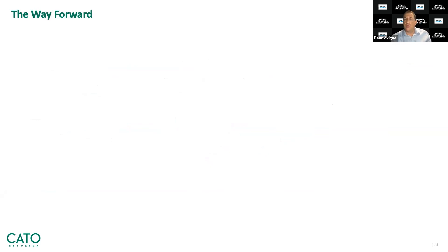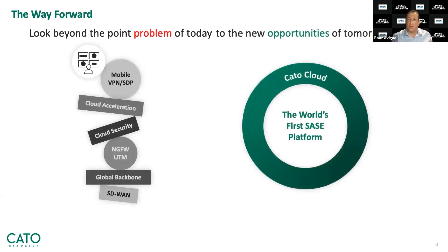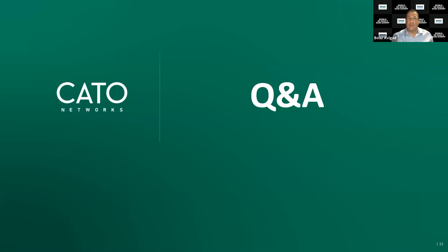So what is the way forward? Solving one problem at a time is how complexity got out of control. Taking a platform approach to your WAN transformation will address the challenges of today and prepare you for the opportunities of tomorrow. Cato, the world's first SASE platform, was built from the ground up to be the network for whatever is next. This concludes the session — thank you all for listening. If there are any questions, please feel free to ask and send them over.